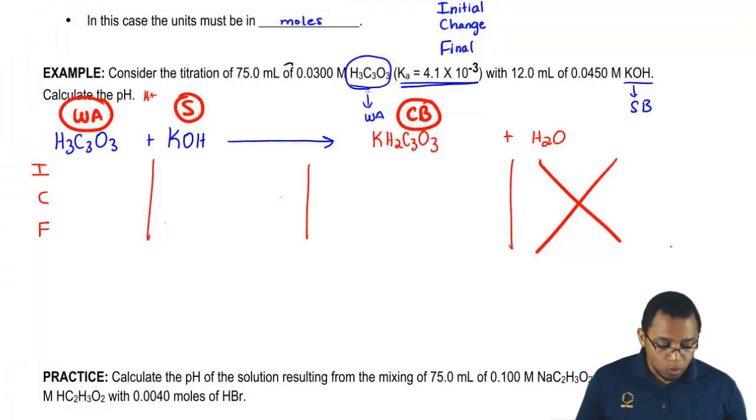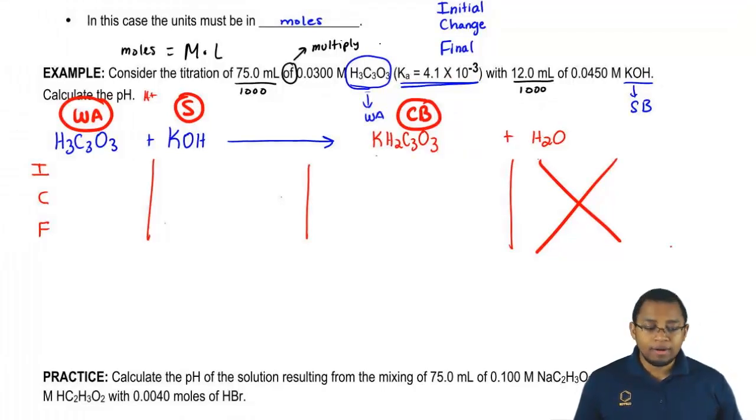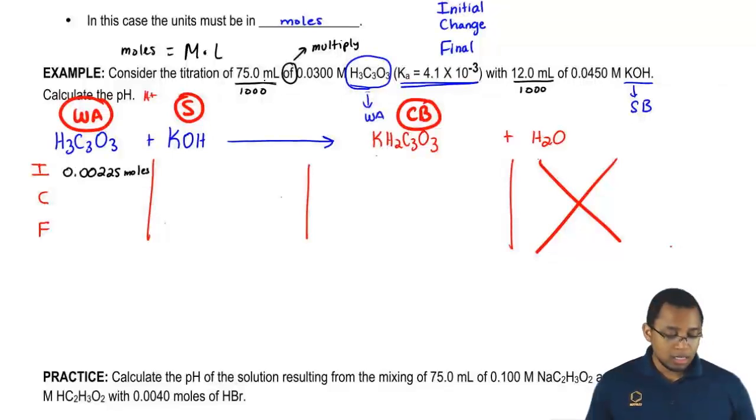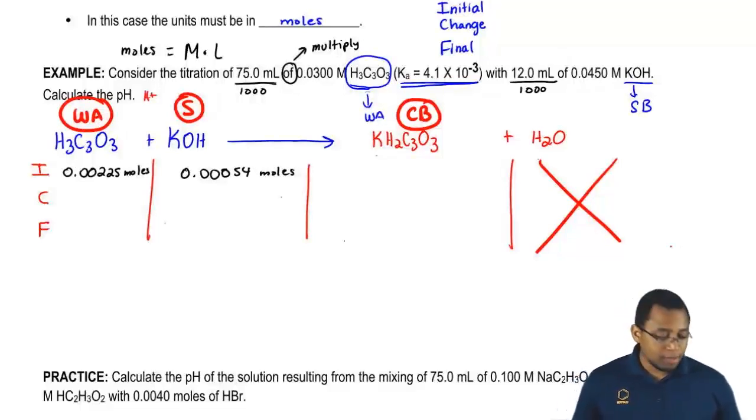What are the units in an ICF? The units have to be in moles. Moles can be found if you take your molarity and multiply it times your liters. Divide the 75 mLs by 1,000, then multiply that by 0.0300 molar to get 0.00225 moles. For the base, divide 12 mLs by 1,000, multiply times the molarity to get 0.00054 moles. I don't give you any information on the conjugate base, so initially it's 0.